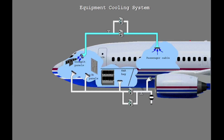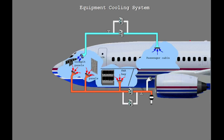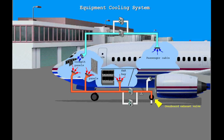The supply fan collects cool air from the passenger cabin and supplies it to the cockpit displays and electronic equipment in the E&E bay. The exhaust fan collects warm air from the cockpit displays, the circuit breaker panels, and the electronic equipment in the E&E bay. On the ground and in flight with a low differential pressure, the overboard exhaust valve is open and the system discards the warm air overboard.